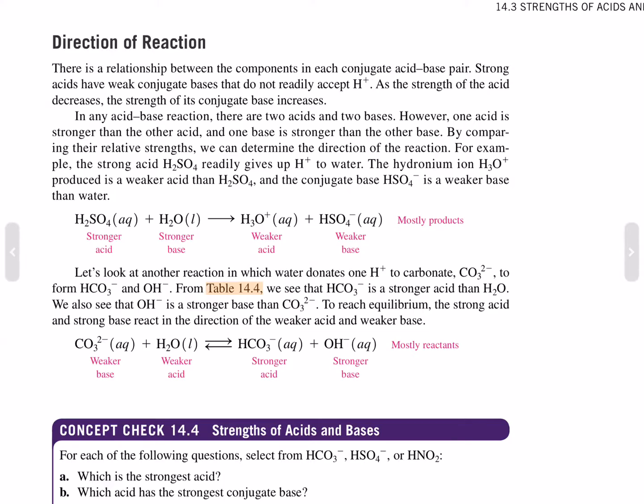Direction of reaction: There is a relationship between the components of each conjugate acid-base pair. Strong acids have weak conjugate bases and do not readily accept protons. As the strength of the acid decreases, the strength of its conjugate base increases. In any acid-base reaction, there are two acids and two bases. However, one acid is stronger than the other acid, and one base is stronger than the other base. By comparing relative strengths, we can determine the direction of the reaction.